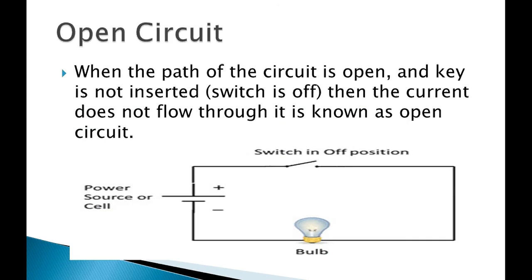The next one is an open circuit. What is an open circuit? Key off — means your switch is off — and appliances are not working. Why? Because the junction is not connected.